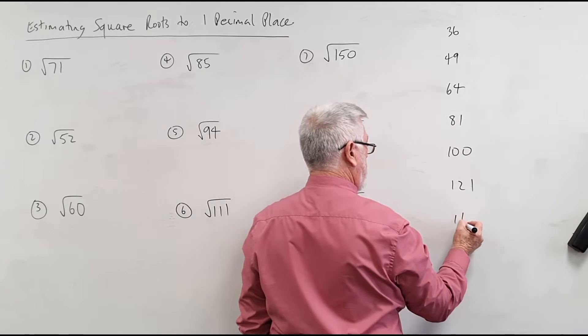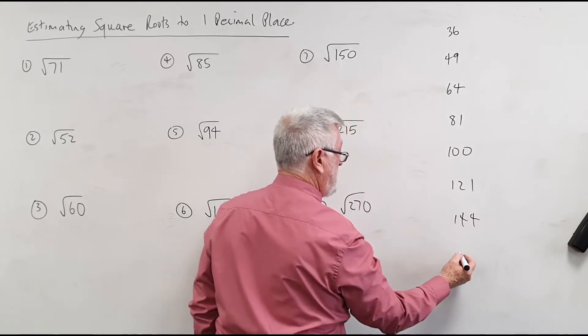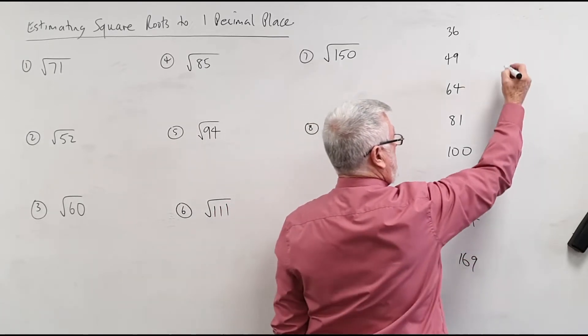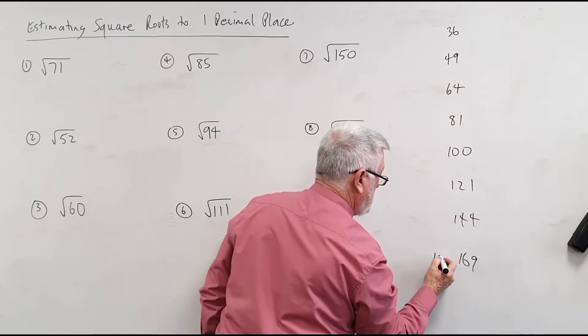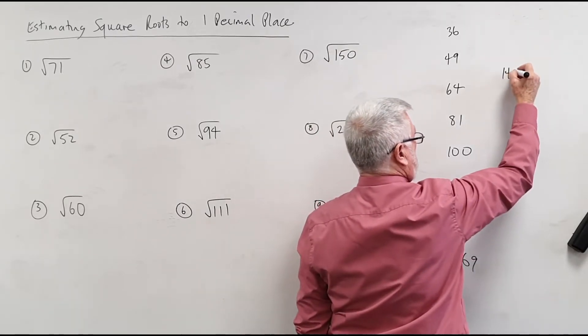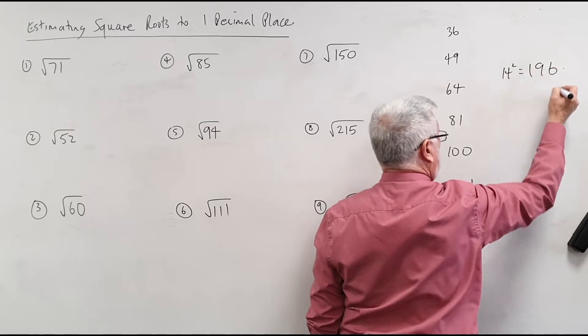121, 12 squared 144, 169, 196. Should I actually write it down? Make it more obvious. 196.